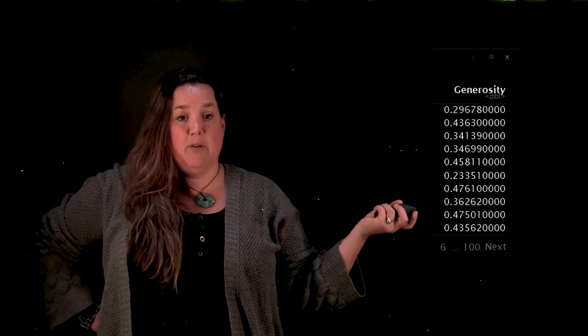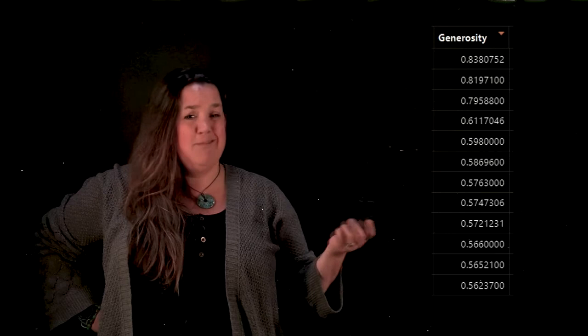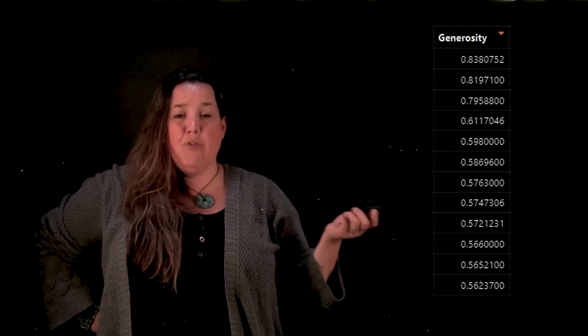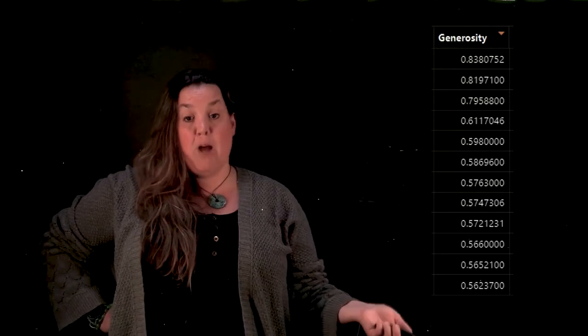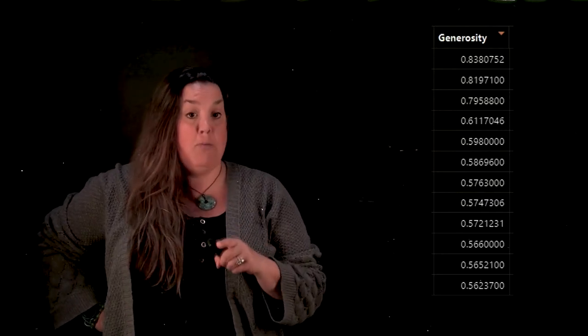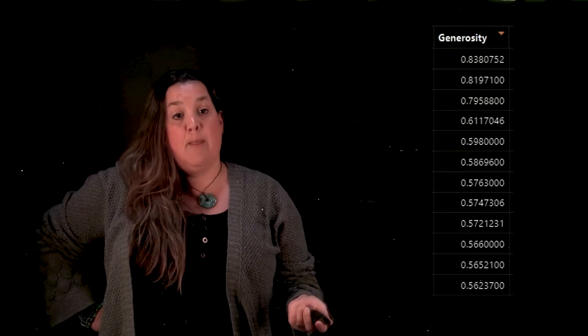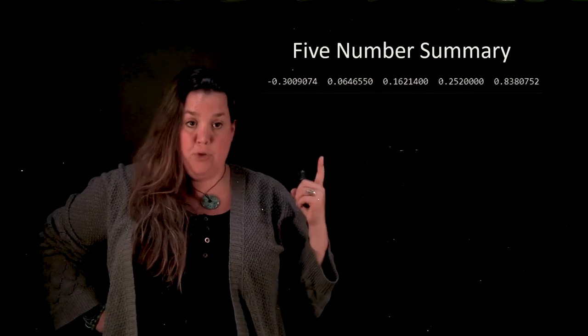That's the whole point of using a computing package. So even though this is how the data looks, this is it ordered. Neither of those things matter. I ultimately can still get the same results just because I have a computing package that's doing all that work in the background, but it is doing that work in the background. So it will order it and that's how it finds the five number summary, which you can see here.